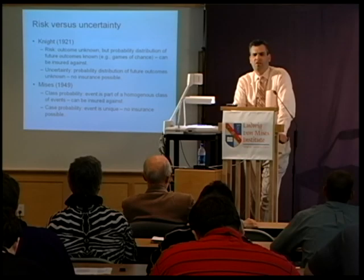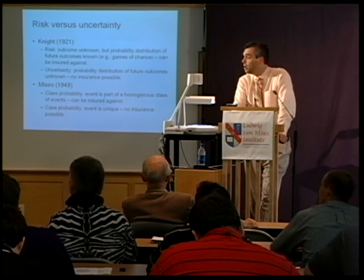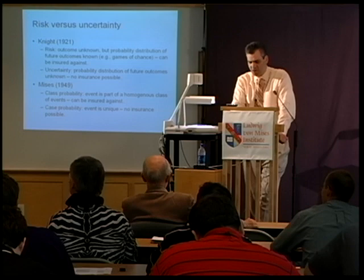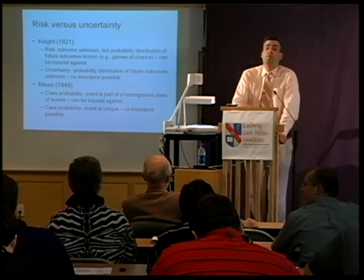For example, suppose Nowitzki wants to be the NBA MVP every year. He can't go to an insurance company and take out a policy that will pay him if Steve Nash or LeBron James is the MVP next year. This simply isn't the kind of information available that would allow a prediction about the probability of one player versus another winning the MVP award.